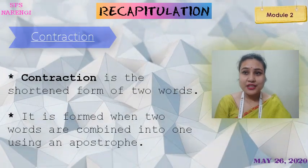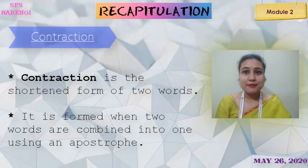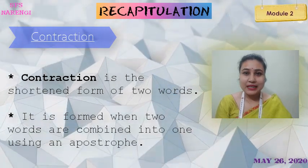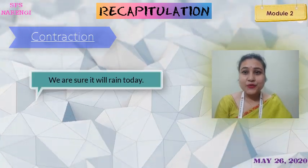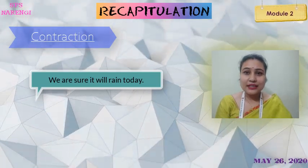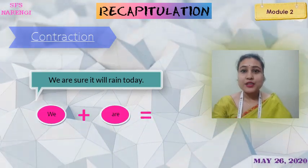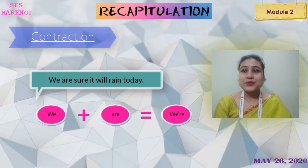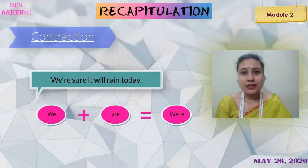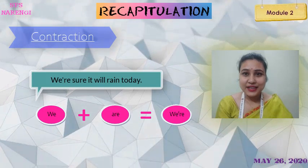Contraction is the shortened form of two words. It is formed when two words are combined into one using an apostrophe. Let's see a sentence: 'We are sure it will rain today.' If we write the contracted form of the words 'we' and 'are', the sentence using contraction will be: 'We're sure it will rain.' Hope you have understood what is contraction.